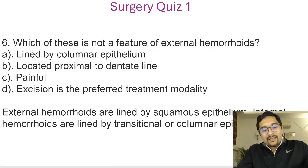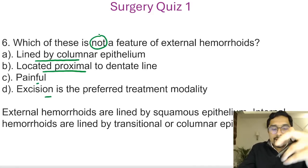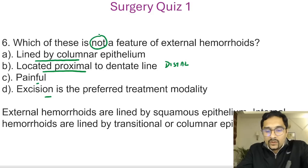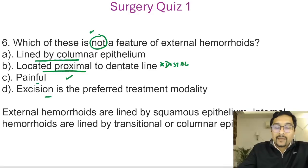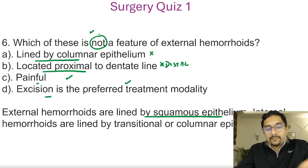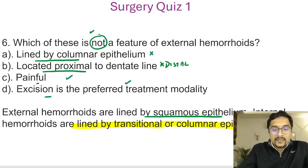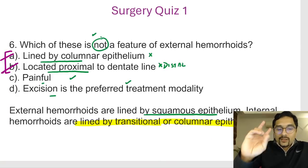Question 6: which of the following is NOT a feature of external haemorrhoids — lined by columnar epithelium, located proximal to the dentate line, painful, or excision as preferred modality? External haemorrhoids are distal to the dentate line, so 'proximal to dentate line' is wrong. External haemorrhoids are also lined by squamous epithelium, not columnar epithelium — internal haemorrhoids are lined by transitional or columnar epithelium. So there are actually two incorrect options here.